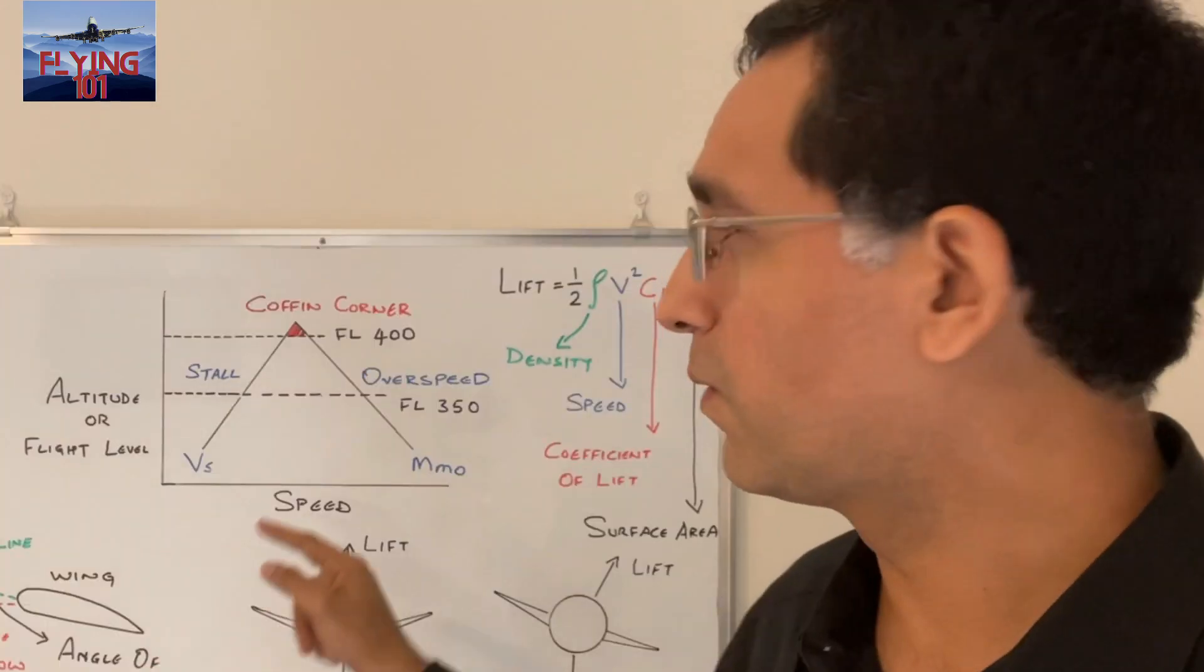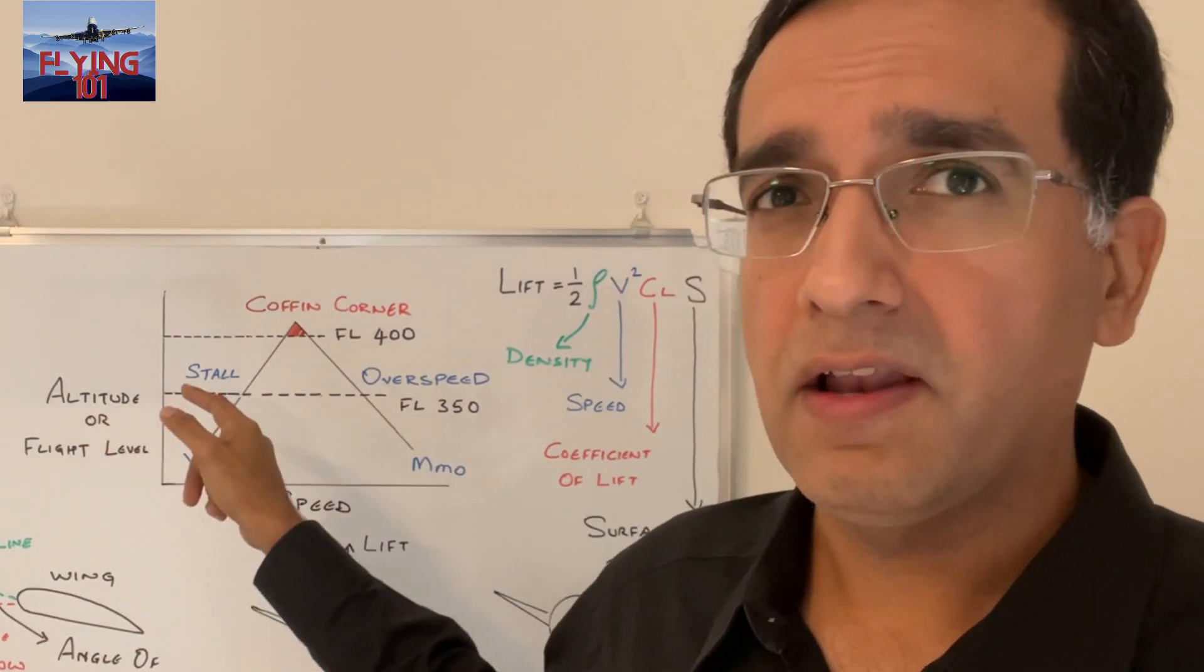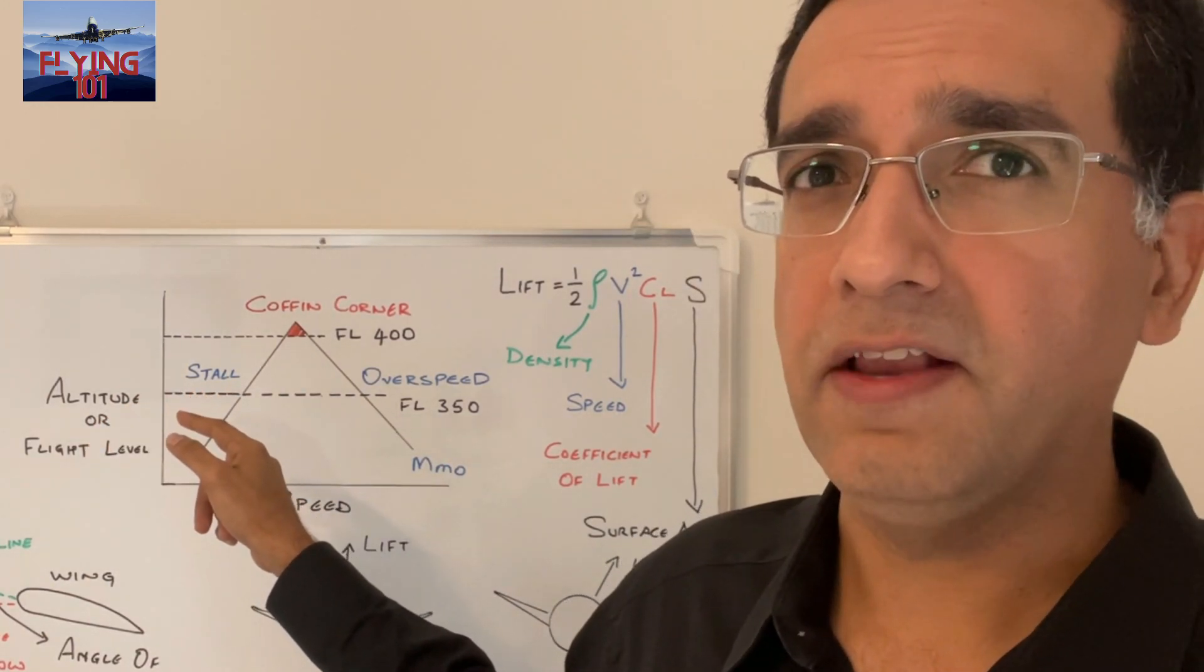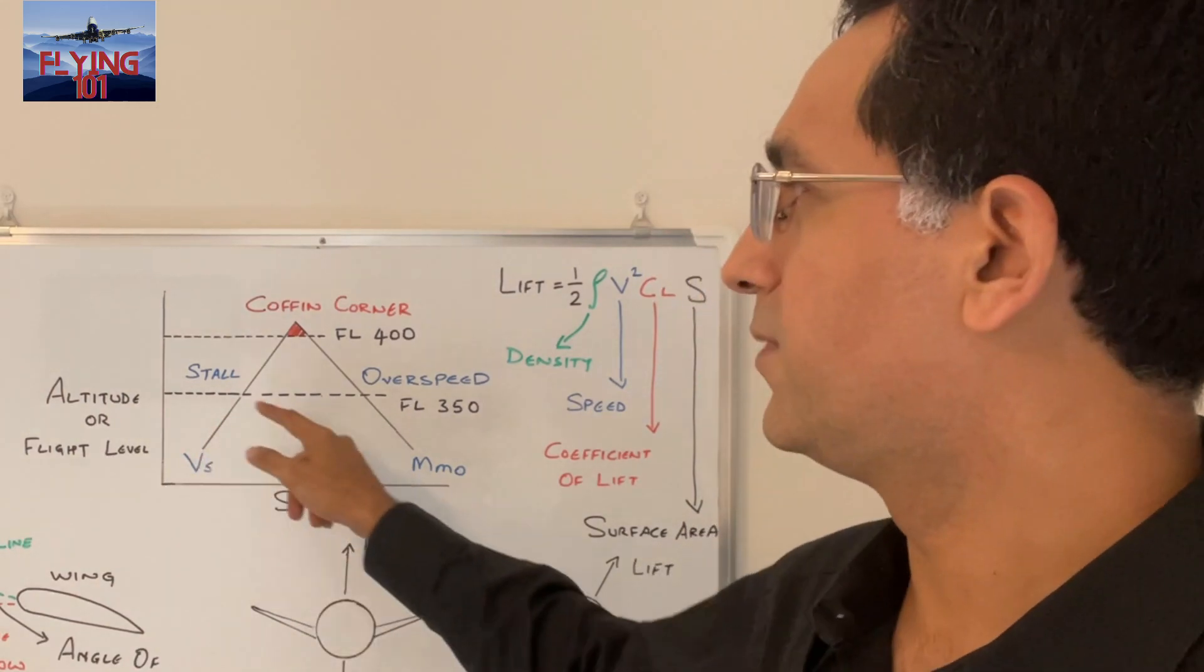To exemplify this, we can see here that for a given gross weight at flight level 350 or 35,000 feet, there will be considerable margin between the two speeds.